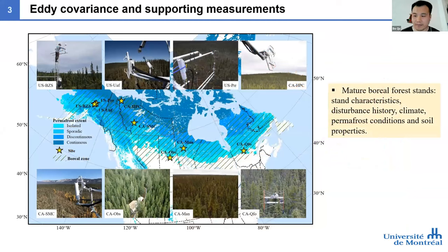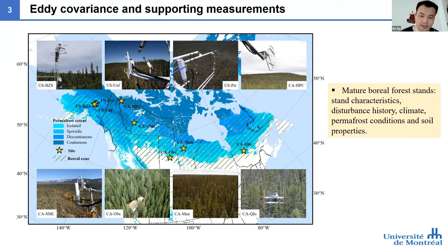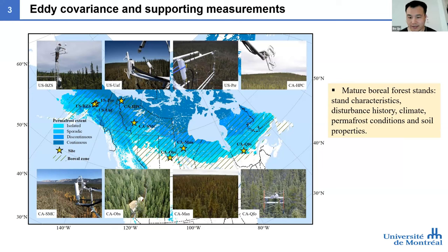Eddy covariance and supporting measurements are important for model evaluation and development, and have played a key role in model development over the past decade. To initialize my study, I use eight sites across the North American boreal forest, covering different permafrost conditions — from the southern limit in the permafrost-free zone to discontinuous and continuous permafrost. They have different climate conditions and all measurements provide data for model evaluation.